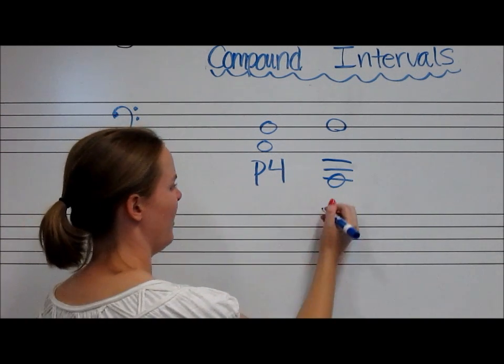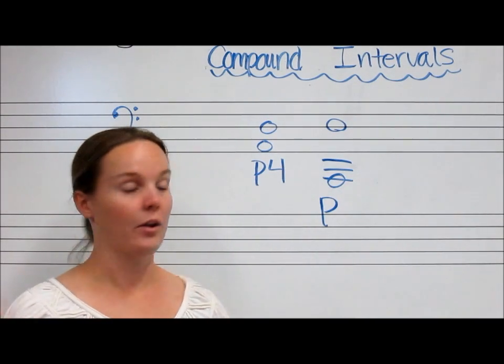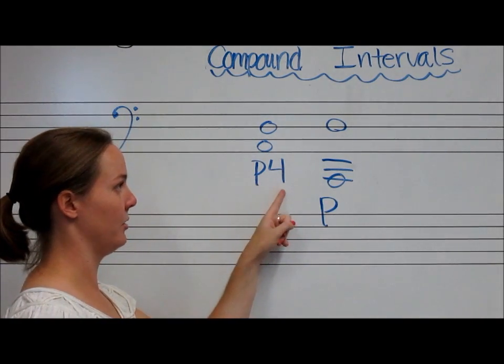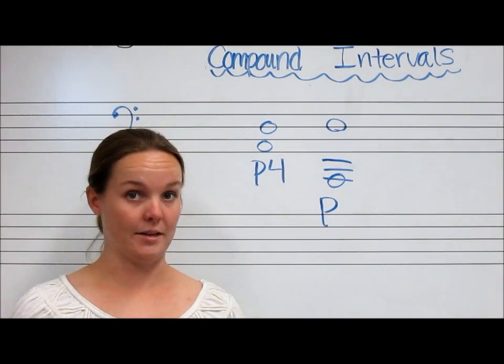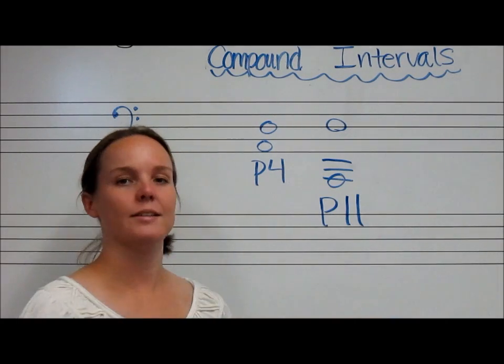And so, now we still have a perfect interval, but it's stretched out by an octave. So, remember, to get the quantity, you add 7 to this number. So, 4 plus 7 is 11. So, we have a perfect 11.